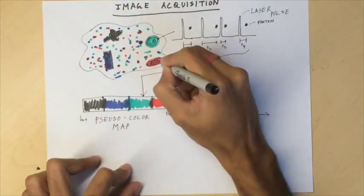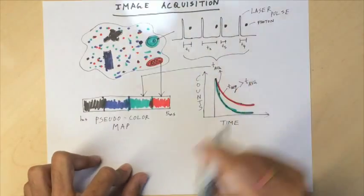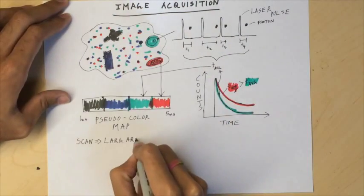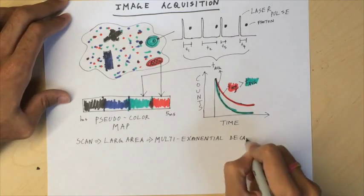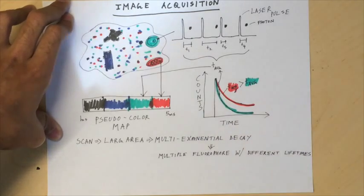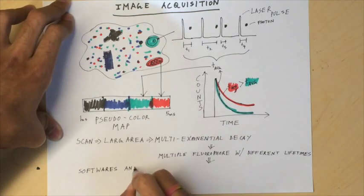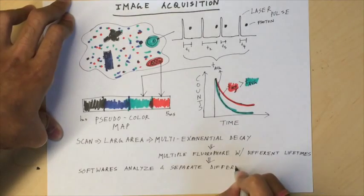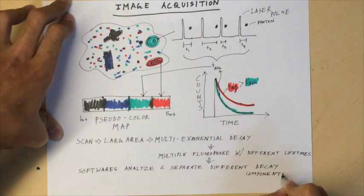Resultant images are then displayed in a pseudocolor map. When analyzing large areas of the image, multi-exponential decays are often observed, indicating the presence of molecules with different fluorescence lifetimes. Software analyzes and separates the different components of decay and produces the result.